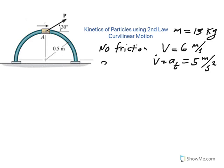What we want to find, so those are all given, is actually the normal reaction exerted by the guide on that slider, so that's N normal force. And also the force P that is actually giving the speed and the rate of change of the speed. So P here is unknown.